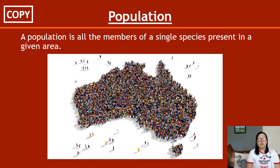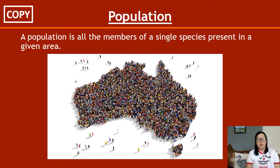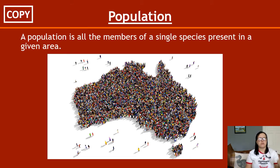Population is word number two. A population is the numbers, or all the members, of a single species present in a given area. The key words to focus on are 'single species' — you're looking for all the members of one species. For example, you could have a population of oak trees in an area, but not a population of trees, because trees is more than one species — you could have oak, beech and ash. Whereas oak trees is one species, so yes, you could say that's a population.